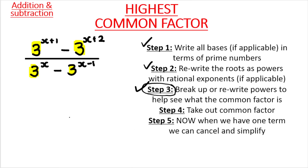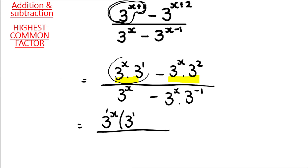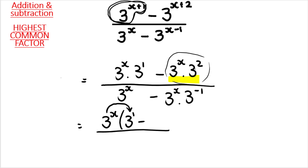Step four: take out the common factor. Looking at the top of the fraction — the numerator — there are two terms. What do they have in common? Three to the power of x. That's the HCF we take out. Opening the bracket: dividing the first term by three to the power of x leaves three to the power of one. Dividing the second term by three to the power of x — the minus drops in — leaves three to the power of two.